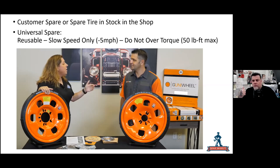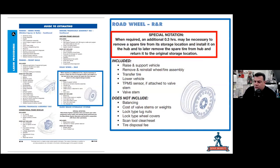Keep in mind that any spare tire or Gunny wheel you utilize carries a labor charge. Looking at the CCC/Motors guide, page G14, Road Wheel R&R: a special notation states that when required, an additional 0.3 hours may be necessary to remove a spare tire from its location and install it on the hub, and later to remove it and reinstall it to the original location. This applies when a vehicle has a disabled tire or disabled wheel and tire assembly and you need to put a spare on.